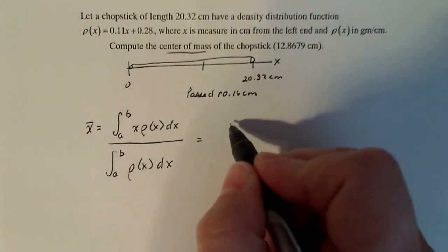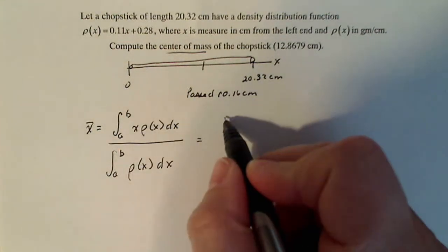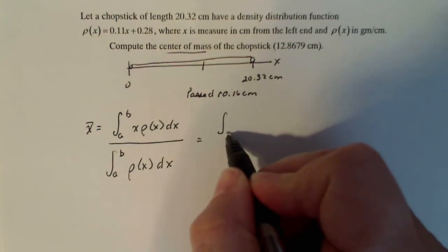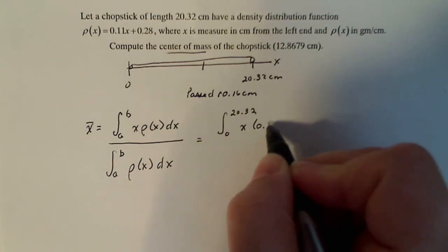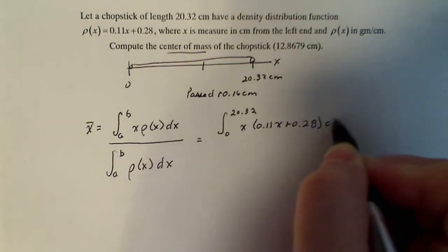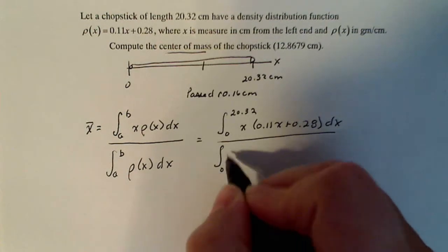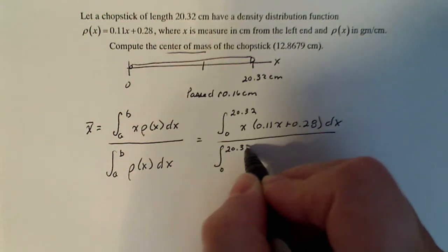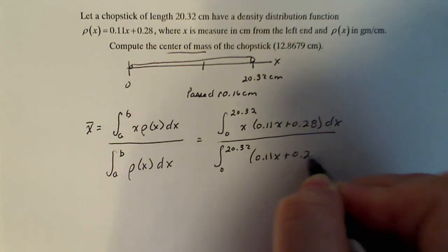I'm going to write these out based on what I have. My a to b is the length of my chopstick. So I'm going to integrate from 0 to 20.32 of x times (0.11x + 0.28) dx divided by the integral from 0 to 20.32 of (0.11x + 0.28) dx.